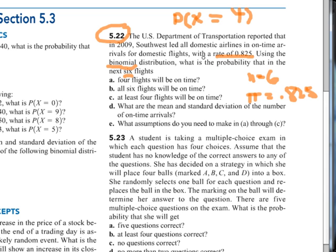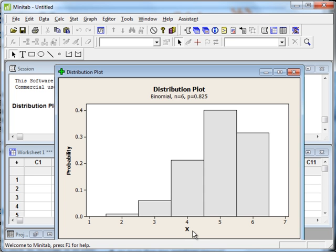We can get that number very easily using the chart that we just made in Minitab. X represents the number of flights on time. We go to four, and we can see that the probability that X equals 4 is 0.212806. And so that's our answer.